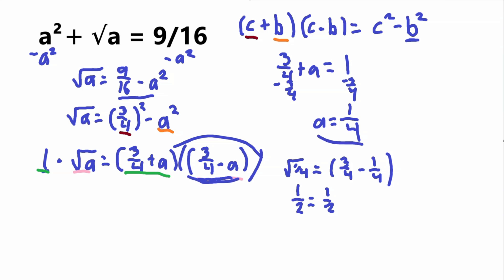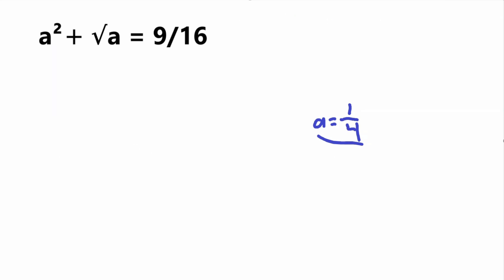Finally, to check this value, let's plug it into the original equation. We have 1 fourth squared plus square root of 1 fourth equals 9 sixteenths. 1 fourth squared: numerator squared is 1, denominator squared is 16, so 1 sixteenth. Plus square root of 1 fourth, which we went over already, is 1 half.